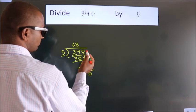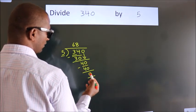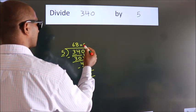After this, there are no more numbers to bring down. We got remainder 0. So this is our quotient.